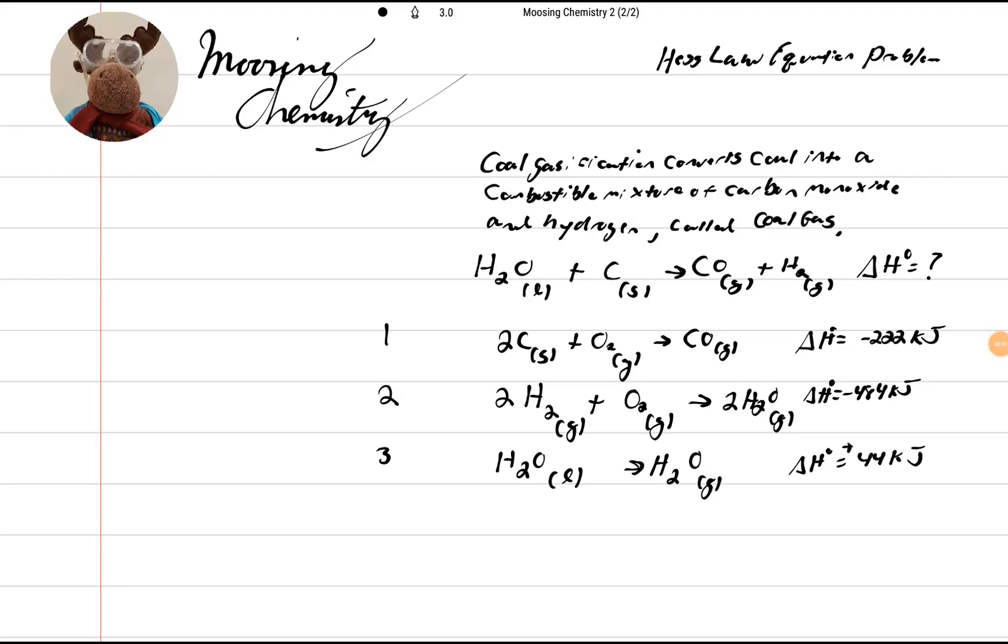Hi, welcome back to Moussing Chemistry. This is going to be a thermochemistry problem with Hess Law. Hess Law is a pretty interesting 19th century way of combining equations. Let's look at this first problem. Coal gasification converts coal into a combustible mixture of carbon monoxide and hydrogen called coal gas. Now given the equation H2O liquid plus C solid yields CO gas plus H2 gas, what is our delta H value?